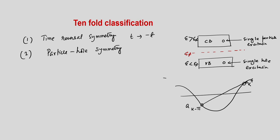We have also learned that time reversal symmetry, written as T, and particle hole symmetry, written as C — the reason we write it as C is because traditionally this particle hole symmetry is denoted as charge conjugation symmetry. It is called CCS, and people who work in high energy physics use this term more often than those in condensed matter physics.